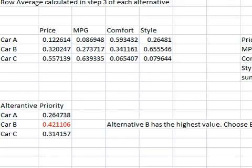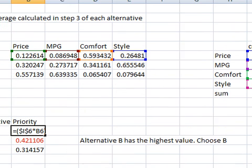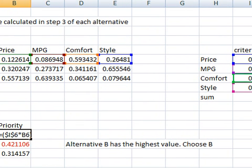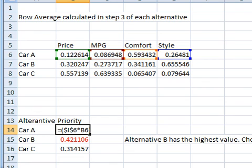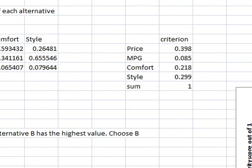I am going to multiply the price value with the price criterion weight plus the MPG value with this weight value, plus the comfort value with this criterion weightage, plus style, and I am going to add them up. I will perform this for car B and car C. I am going to choose car B since it has the highest value. Here is our prioritization.